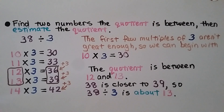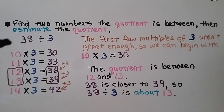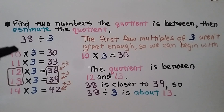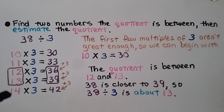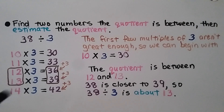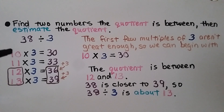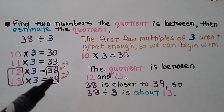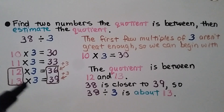We need to find two numbers the quotient is between, then estimate the quotient. We have 38 divided by 3. We know 10 times 3 is 30, and that's pretty close, so we can start with 10 times 3. Then 11 times 3 is 33, 12 times 3 is 36, 13 times 3 is 39. We found the two numbers — 36 and 39 — that 38 is between. The quotient is between 12 and 13. And since 38 is closer to 39, 38 divided by 3 is about 13.